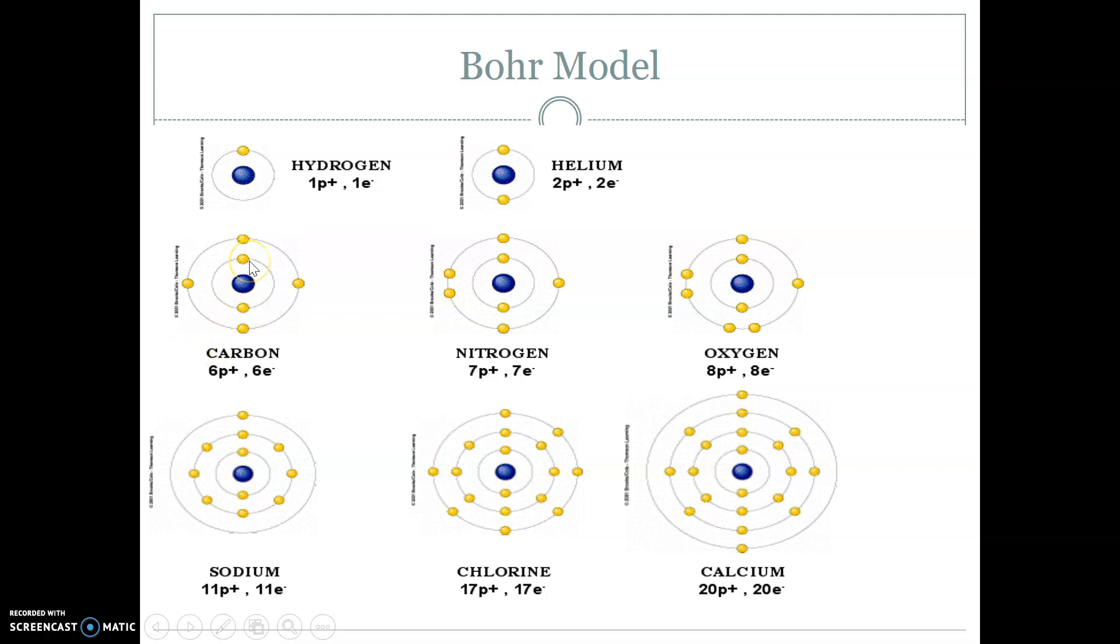So we fill up one, two in the first energy level. And then one, two, three, four. What this means is that it has four valence electrons or four outer electrons, which can be used in bonding.